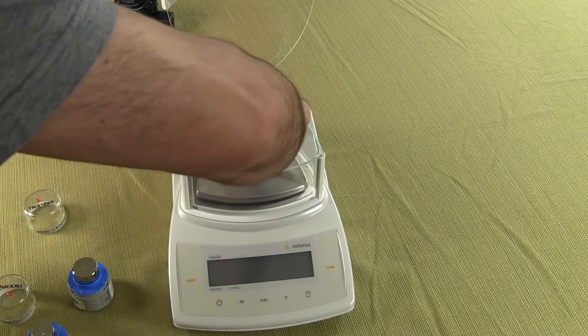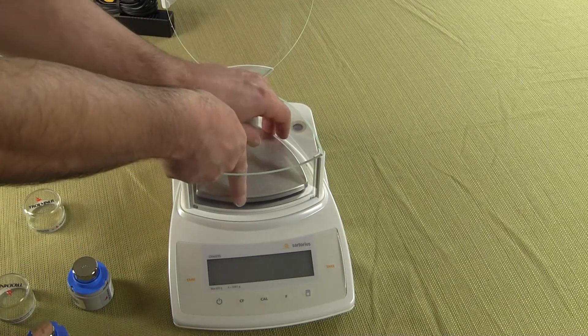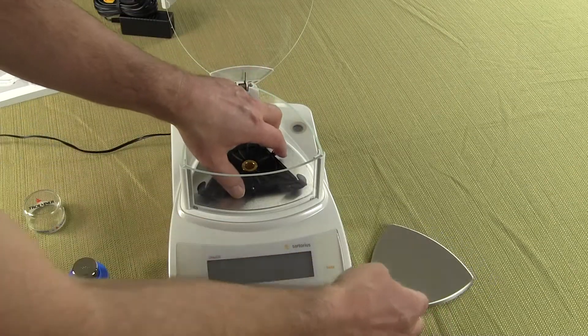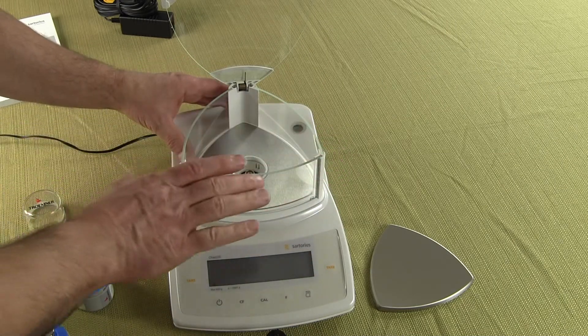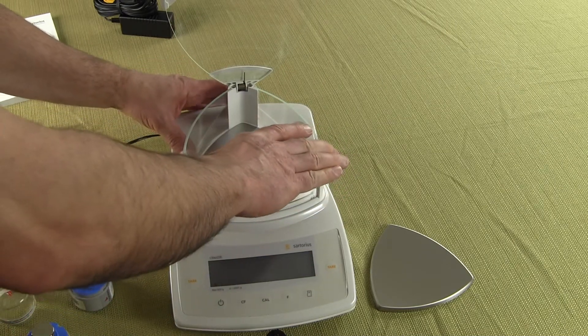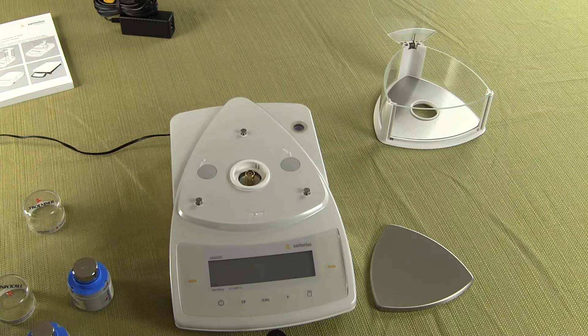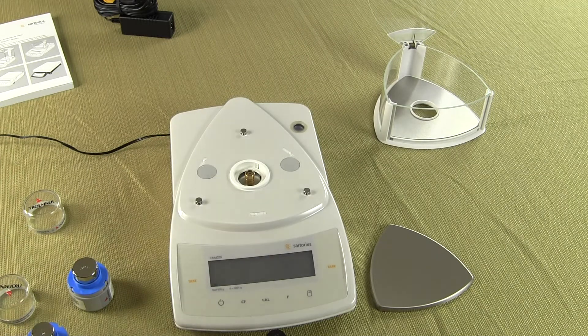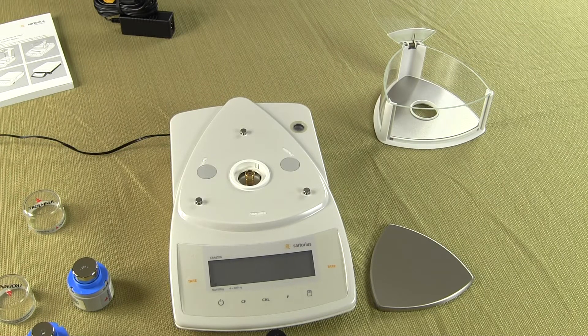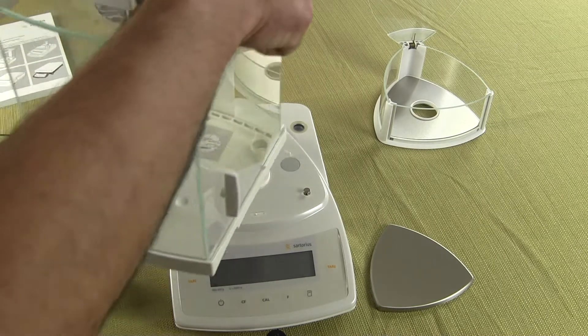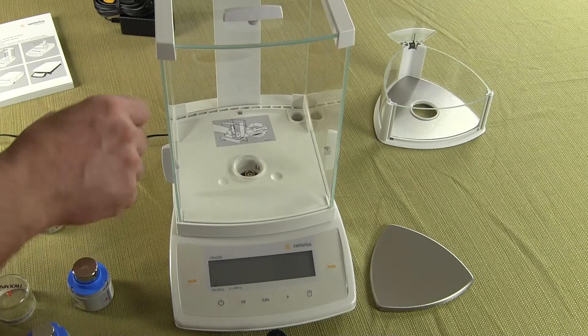So I want to show you the optional glass draft shield that's available on this balance. So I need to take off the weigh pan and support pan. And again to take this off, this draft shield I'm just going to twist, come straight off and over. Now sometimes people might want to do density determination and if so on the milligram balances you would have to buy, or it's highly recommended that you buy the optional square draft shield.